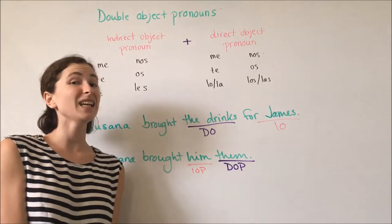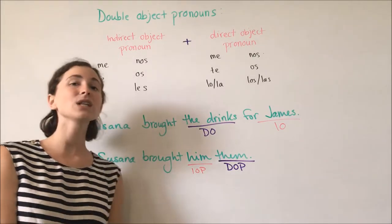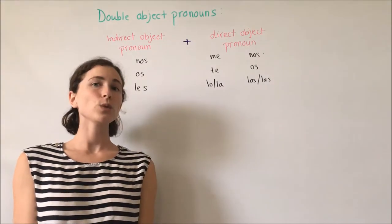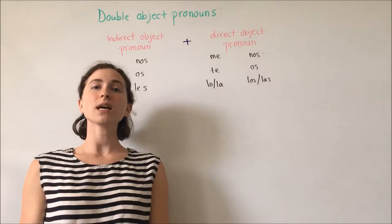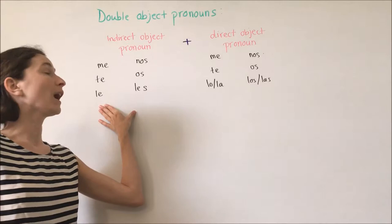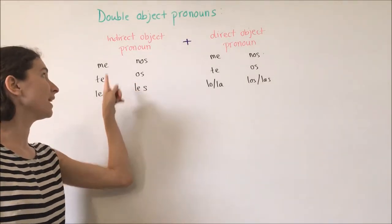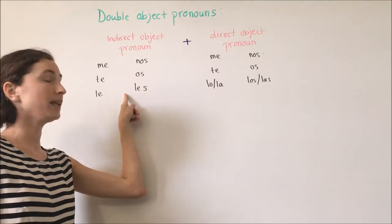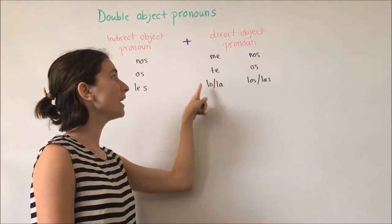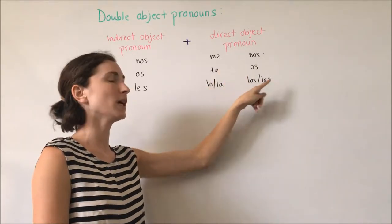Here we see in English how we might use an indirect object pronoun and a direct object pronoun together. In Spanish, we can similarly use our indirect object and direct object pronouns together. To review, for our indirect object pronouns, we have: me, te, le, nos, os, les. And our direct object pronouns are: me, te, lo, la, nos, os, los, las.